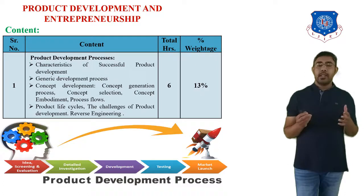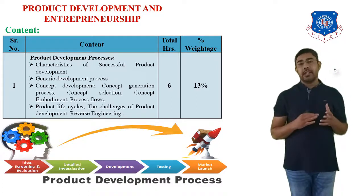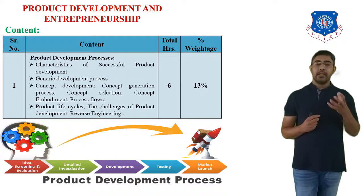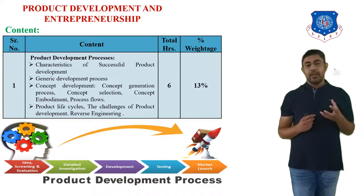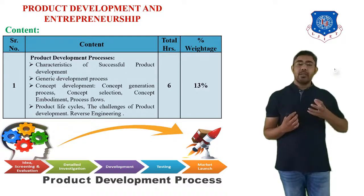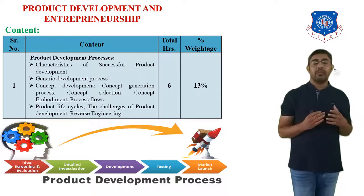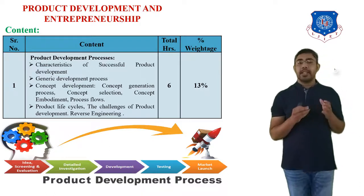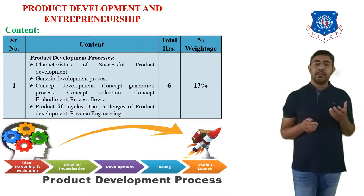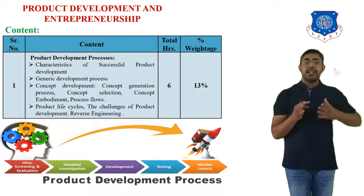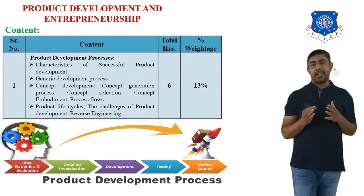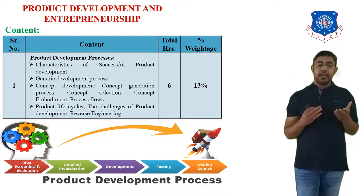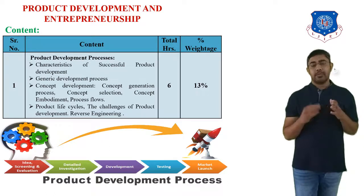In this chapter, you have to learn the characteristics of successful Product Development. When you buy any product, you think about the cost and quality of that product, and based on these parameters the characteristics of successful product development are derived. You also have to learn the generic product development process. There are many product development processes with minor variations, and it is not necessary to follow the same one — companies can follow different processes for different products.